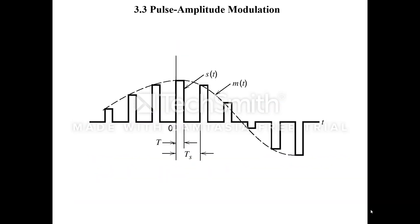Now we go into detail of pulse amplitude modulation. If you see the waveform very carefully, I have a PAM signal — that is pulse amplitude modulated signal — where the amplitude of the pulses are varying in accordance with the amplitude of the modulating signal. The modulating signal is indicated as M of T, whereas the PAM signal is denoted as S of T. The duration of the pulse is capital T, whereas the sampling interval is T suffix S.